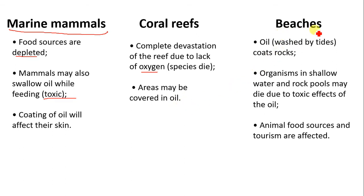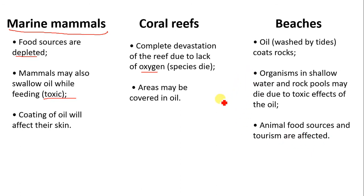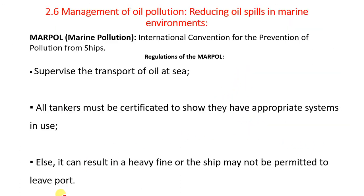On beaches, oil is washed in by tides, coating rocks and organisms in shallow waters. Rock pool organisms may die due to the toxic effects of the oil. Animal food sources and tourism are also affected by oil spill.